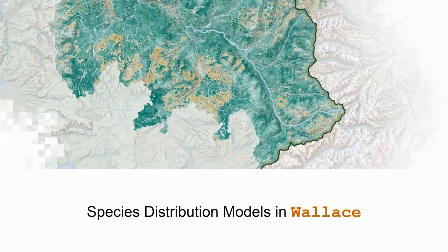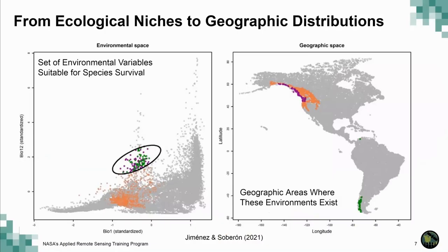Let's start with species distribution models in Wallace. I want to have a brief recap on what SDMs are and how they work. One of the things SDMs try to do is characterize a species niche in terms of the environmental variables necessary for its survival and persistence in environmental space. We take, for example, precipitation and temperature and find this combination, then transfer that into geographic space to find areas where these environments exist and where our species could persist.